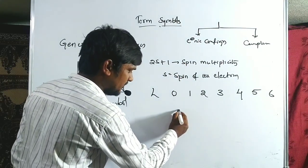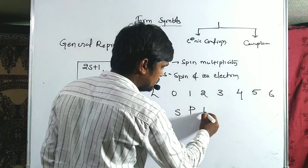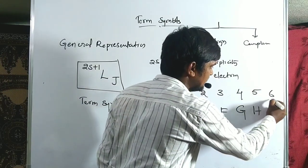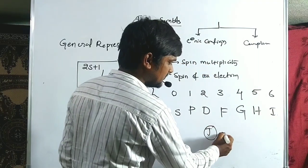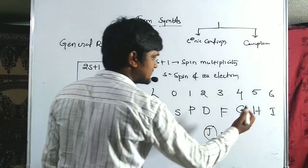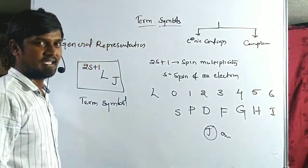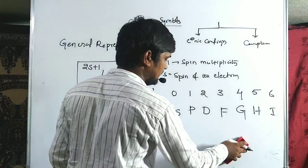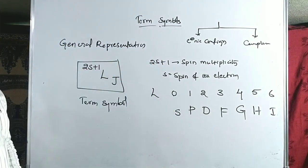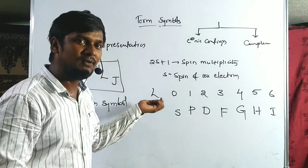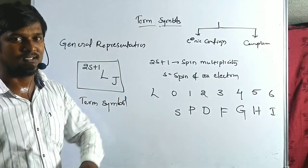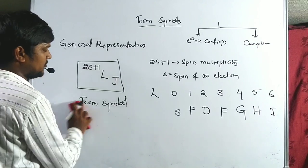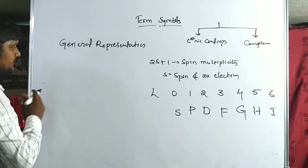The symbol for L=0 is S, 1 is P, 2 is D, 3 is F, 4 is G, 5 is H, 6 is I. Note that J is omitted in this series — after I the next symbol is K. J cannot be used in the term symbol. These L values come from the magnitude of the orbital electrons, i.e., the ML values.